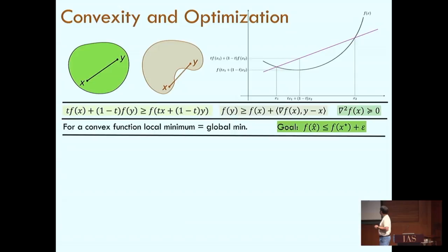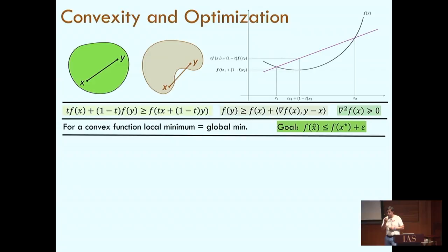So x-star is some optimal solution, some minimum of this function. What we would like in convex optimization is to find a point x-hat which is not too far off from the value at the optimal point. This error is measured by the parameter epsilon, which is given as input.